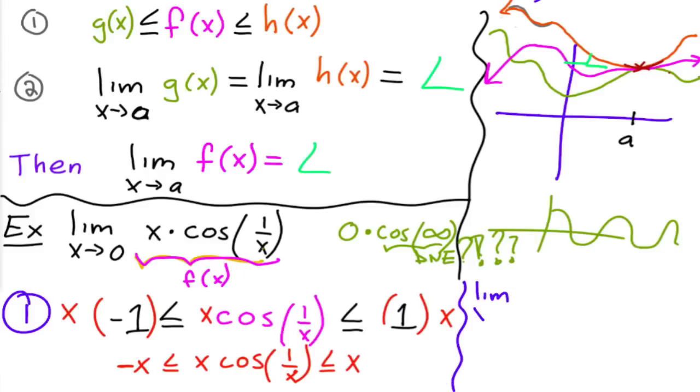What we need to do is we need to find the limit as x approaches 0 of g of x, which is this guy, and that's equal to 0. And then we need to find the limit as x approaches 0 of h of x, which is this guy right here, so x, and that's also equal to 0.